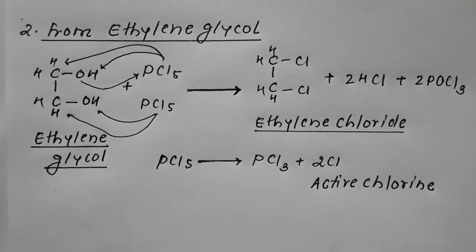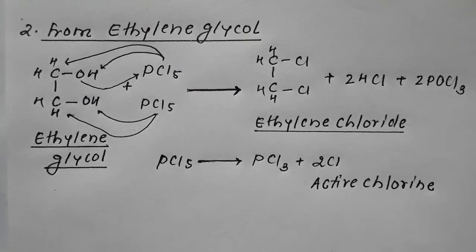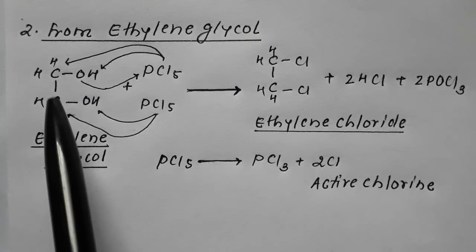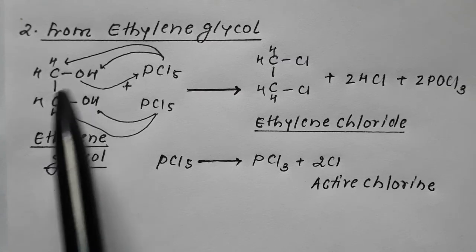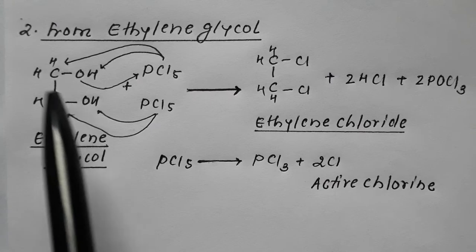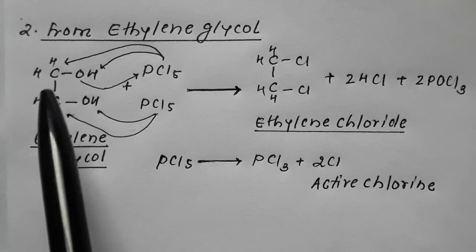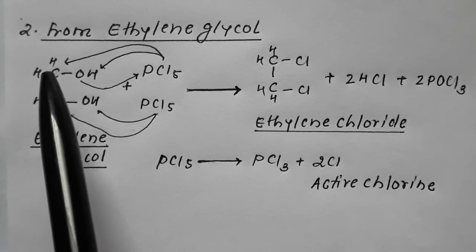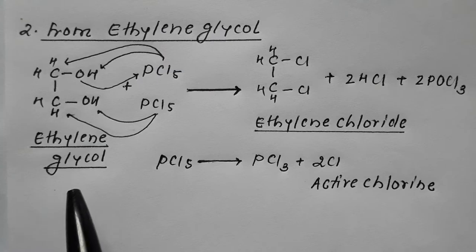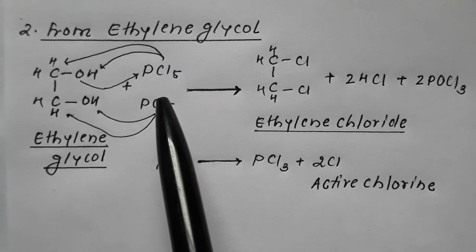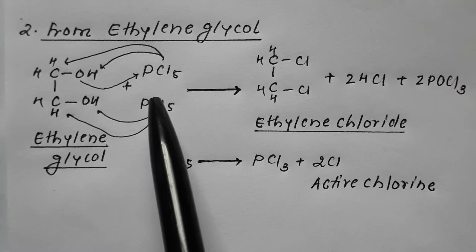The next method to prepare ethylene chloride is from ethylene glycol. Ethylene glycol is a two-carbon compound with one hydroxyl group at position one and another at position two — this is ethane-1,2-diol, commonly termed ethylene glycol.